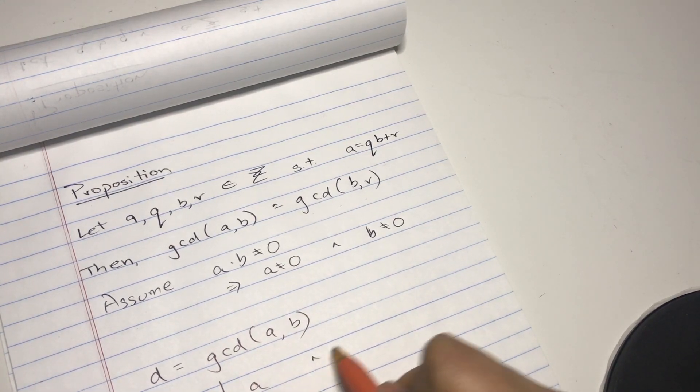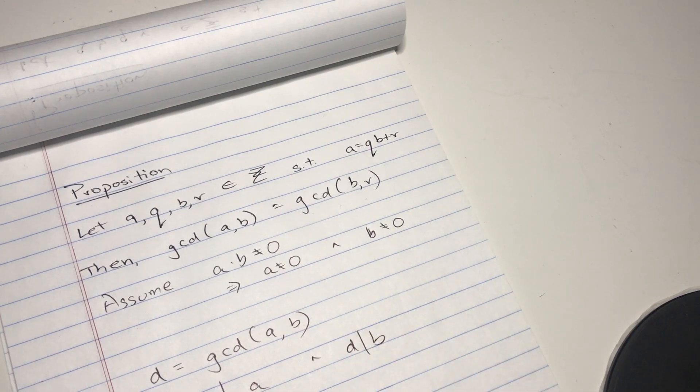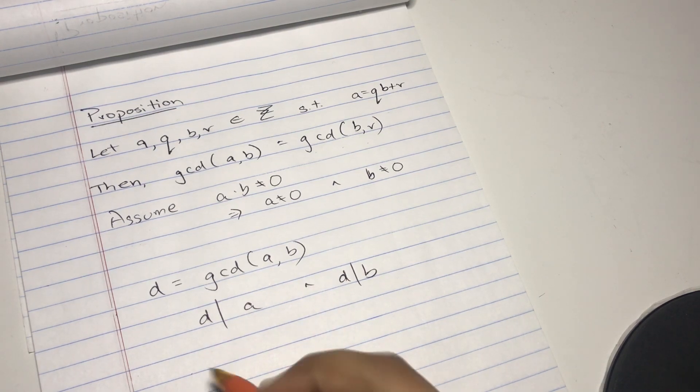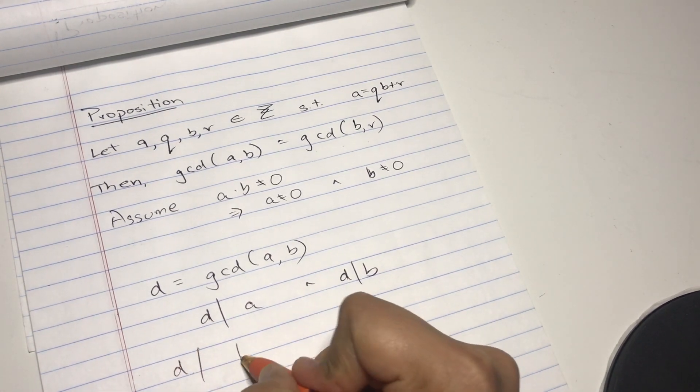Which means d divides a and d divides b. That's correct, right? So yes, if this is the case, then d has to divide any linear combination.